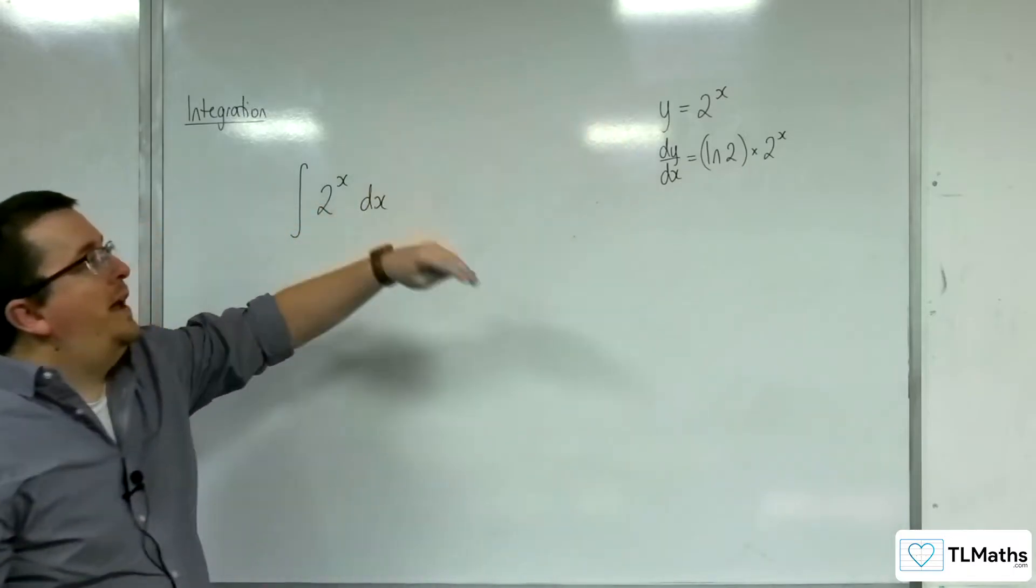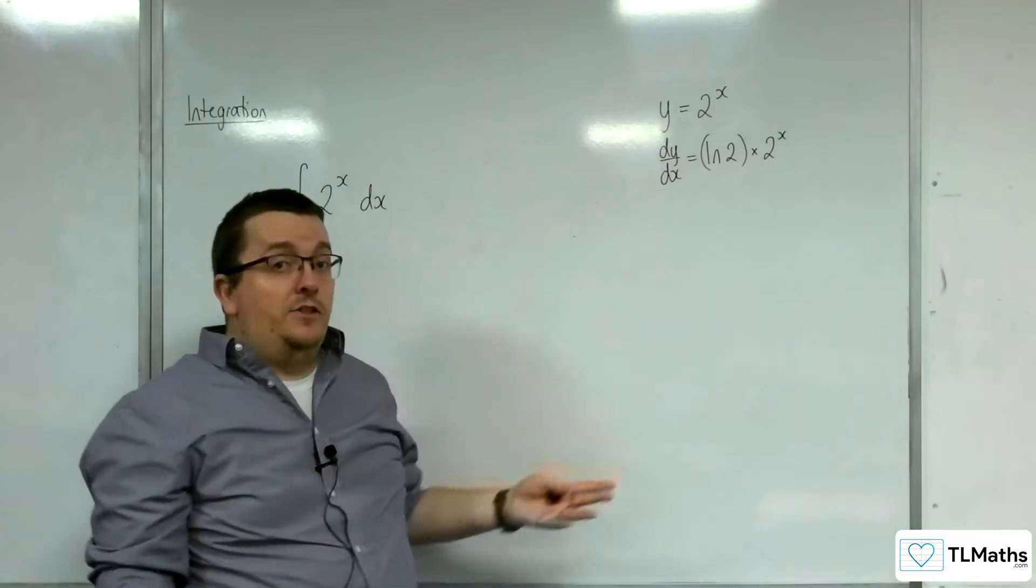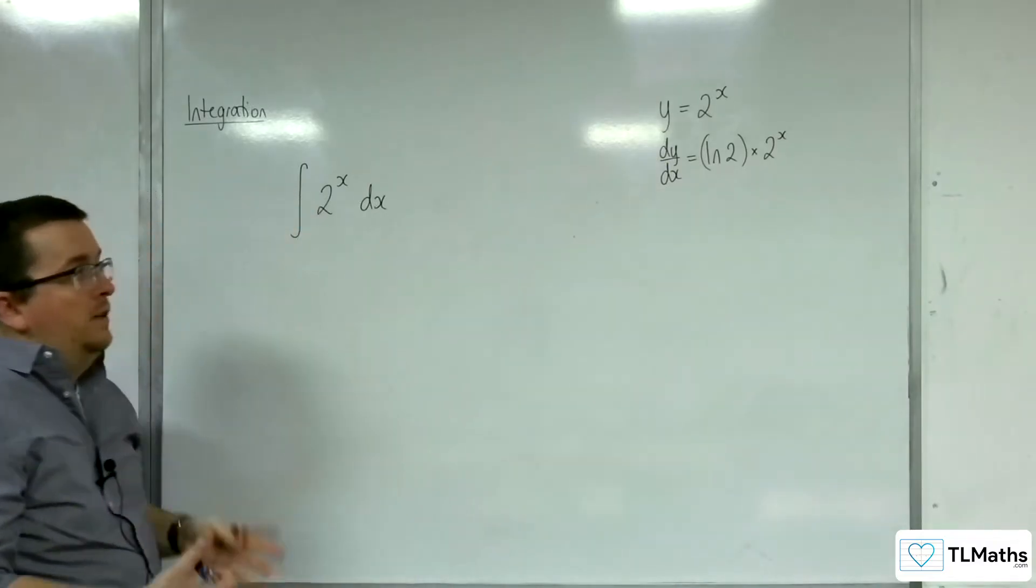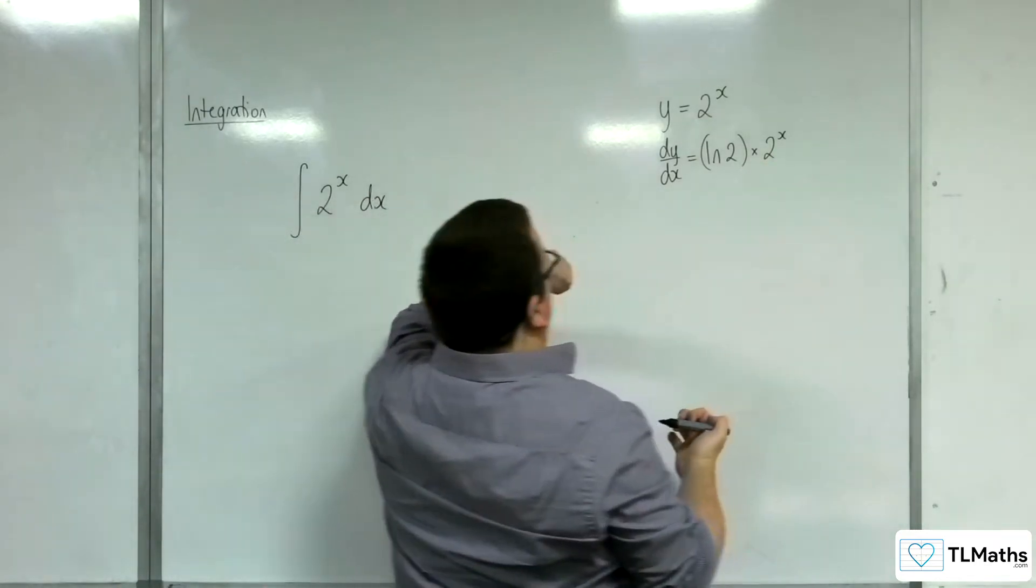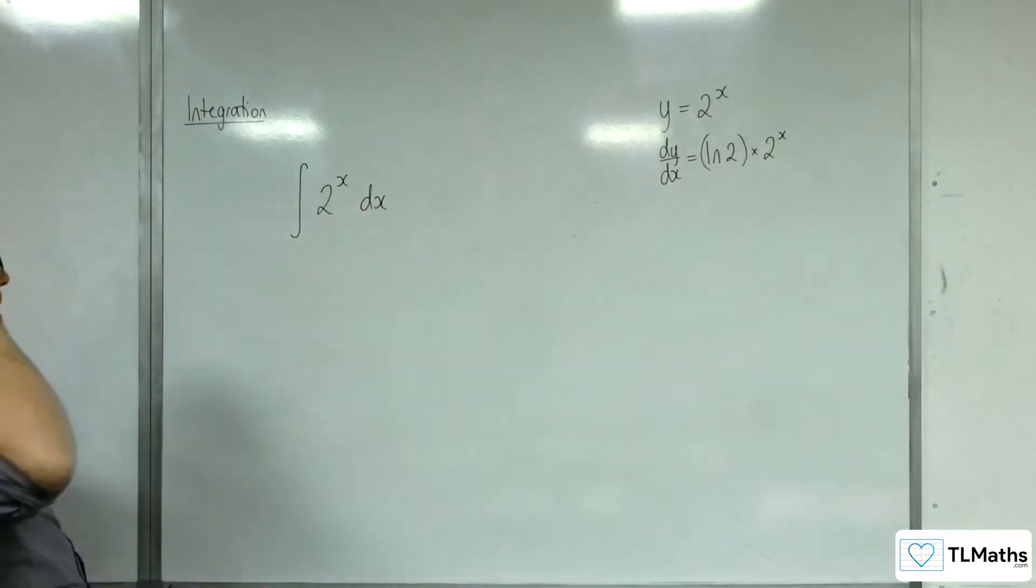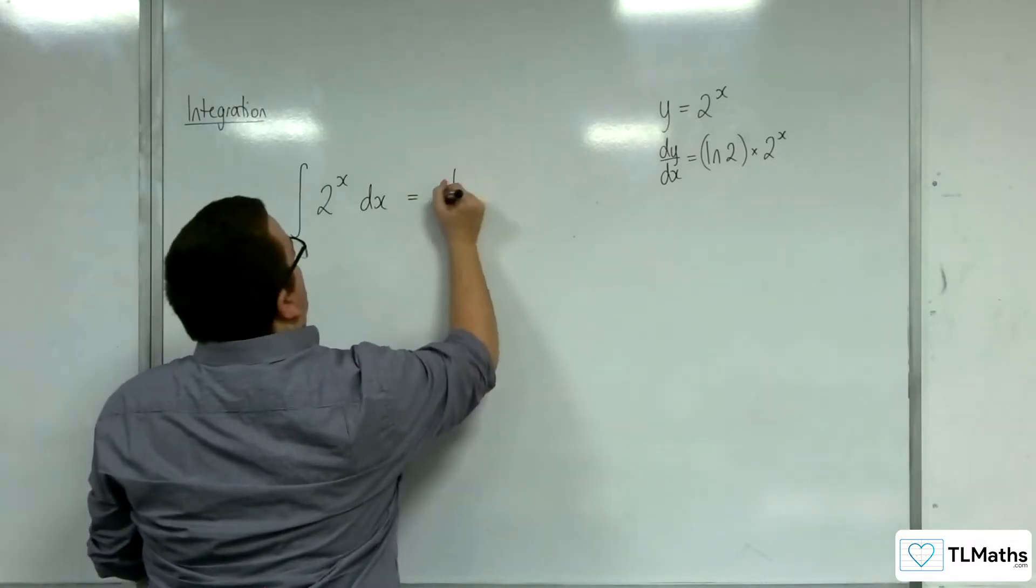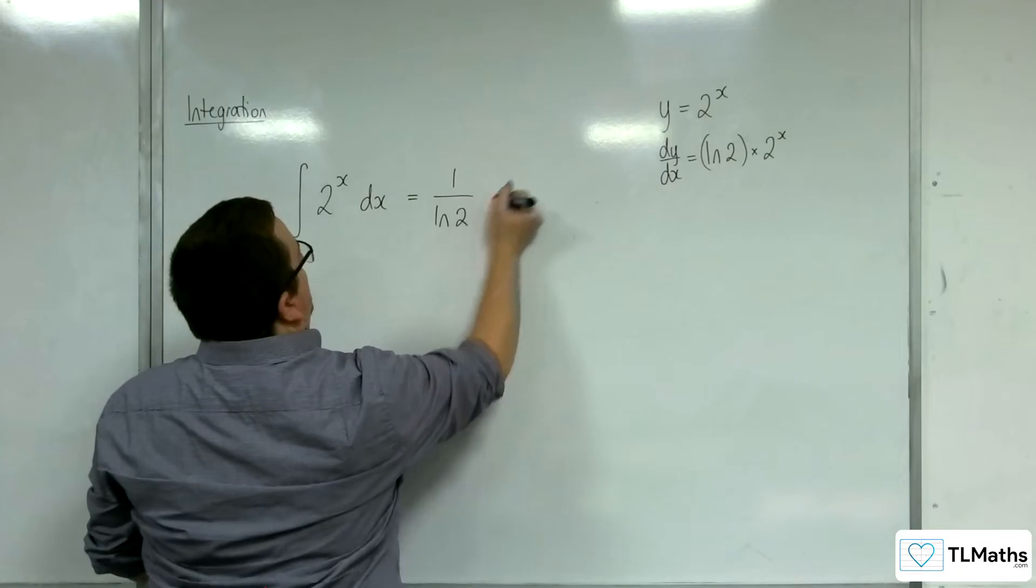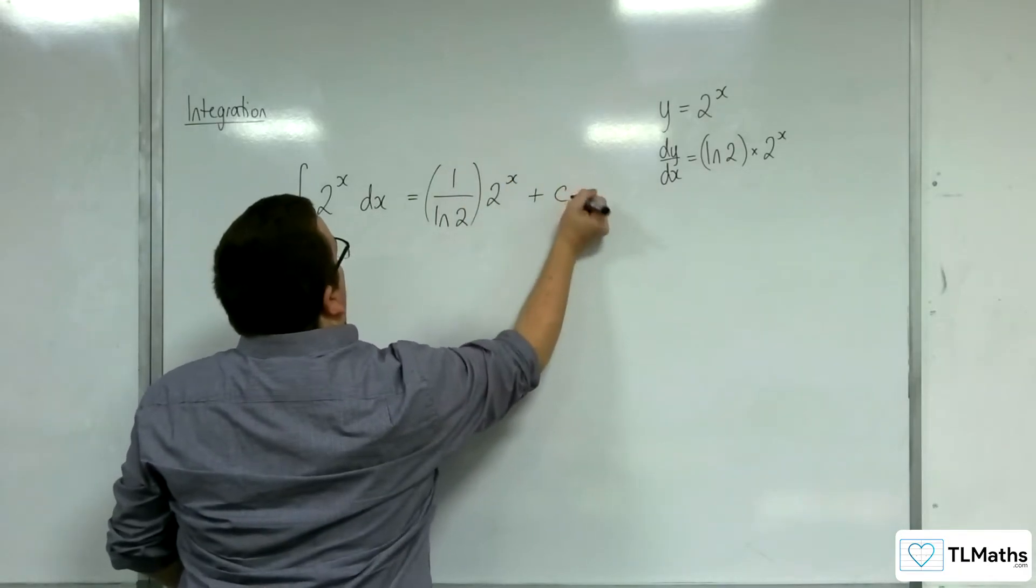Now, once you understand that y equals 2 to the x differentiates to log 2 times 2 to the x, integrating 2 to the x is straightforward—just going backwards here. Okay, so that means this has to integrate to 1 over log 2 times 2 to the x plus your constant of integration c.